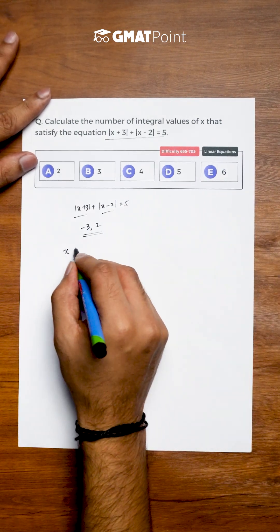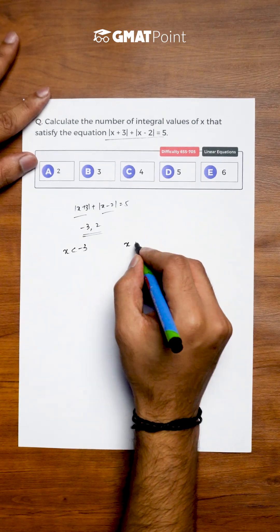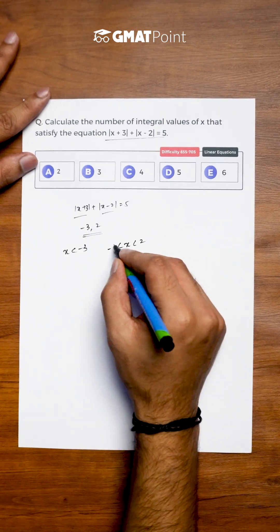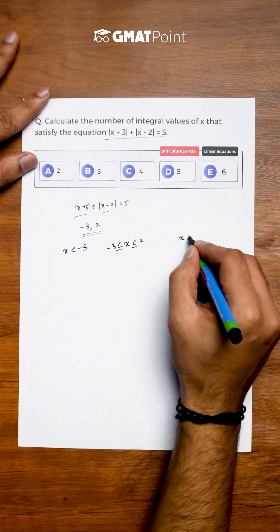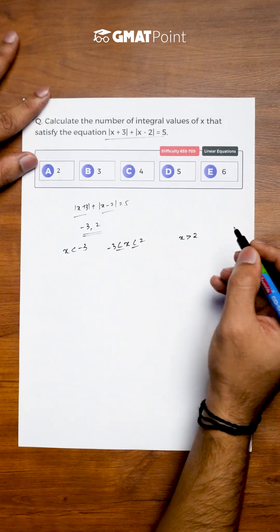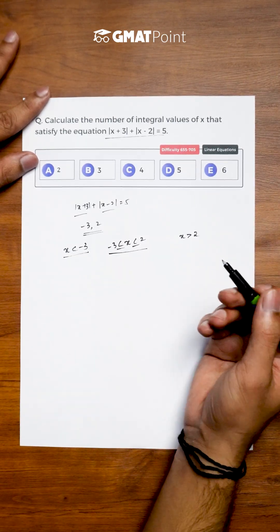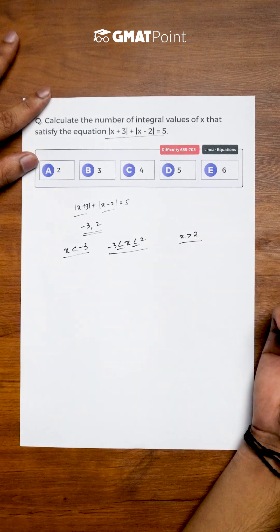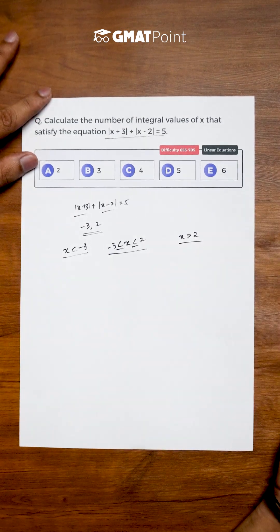We need to look at three ranges of values of x to see which satisfy the given equation. The three ranges are: x less than -3, -3 less than or equal to x less than or equal to 2, and x greater than 2. These three ranges cover all values of x.